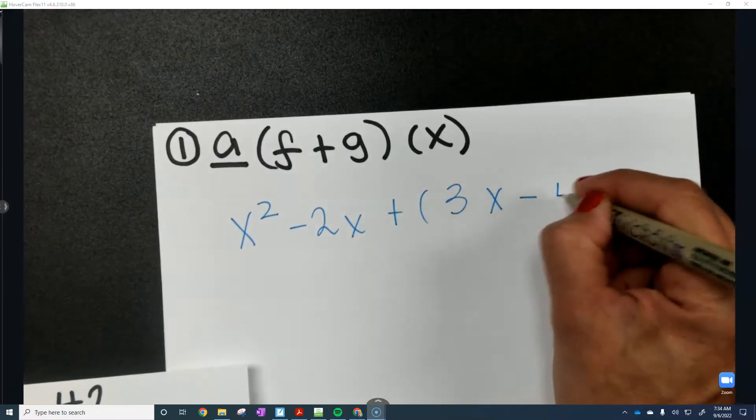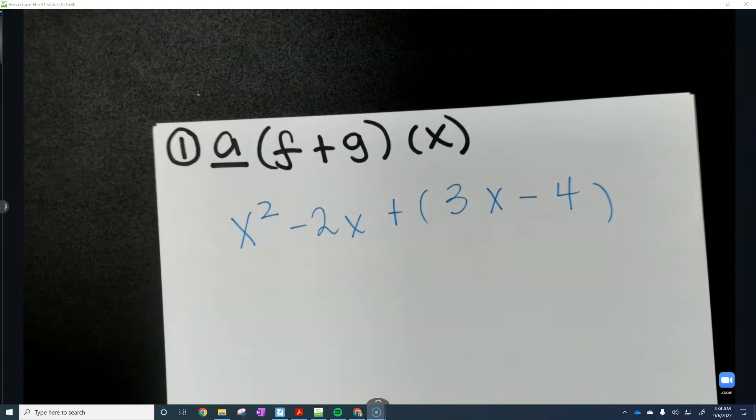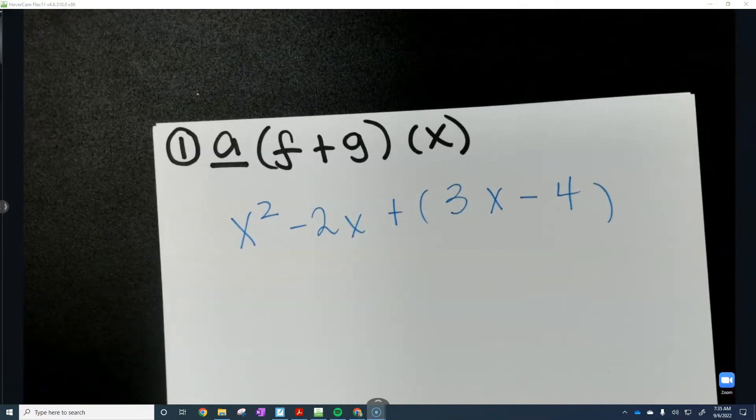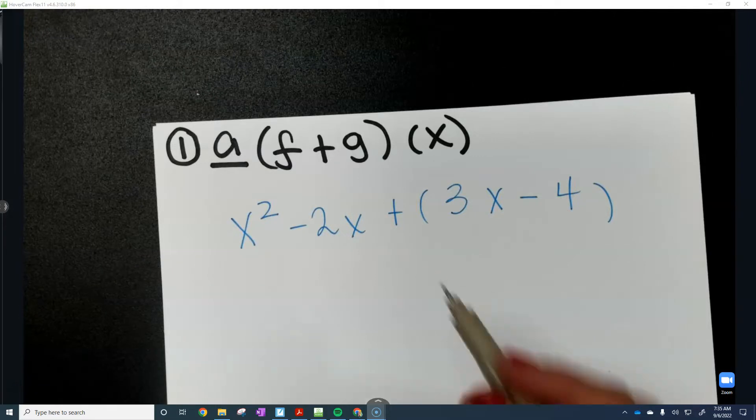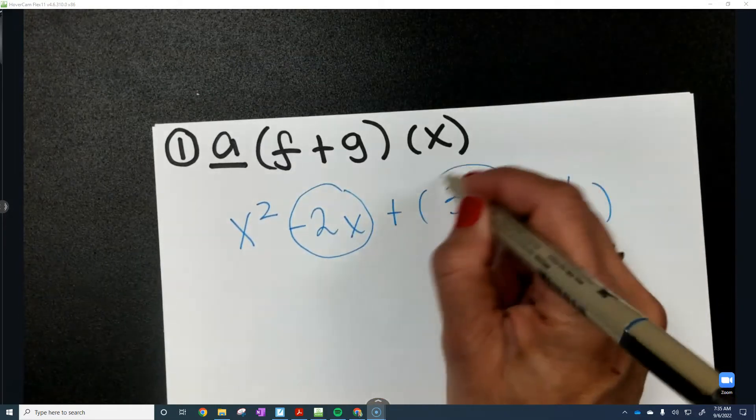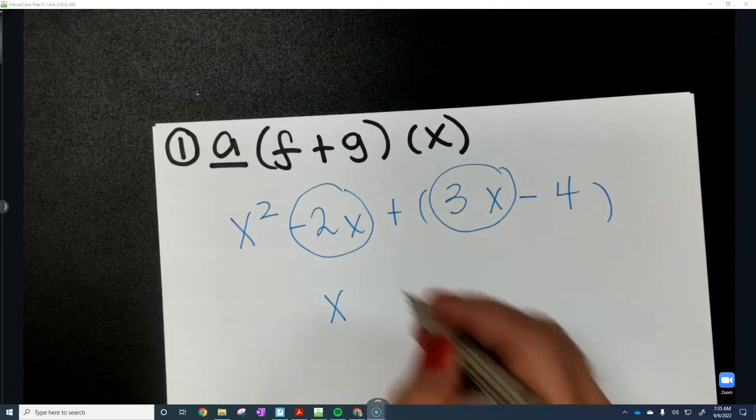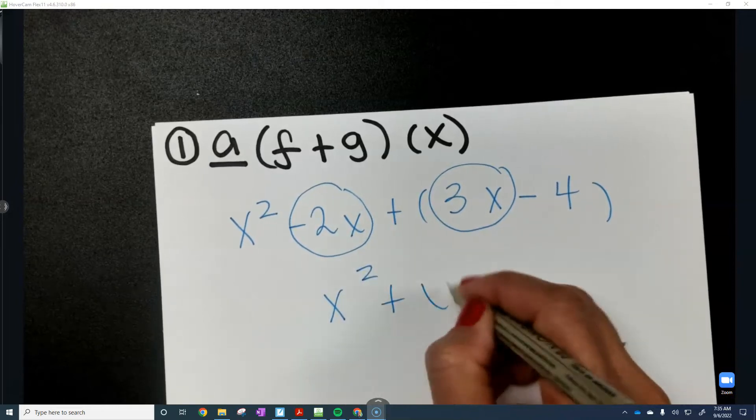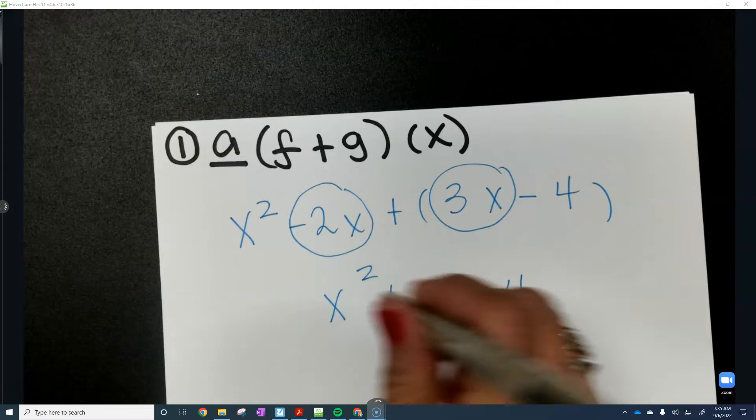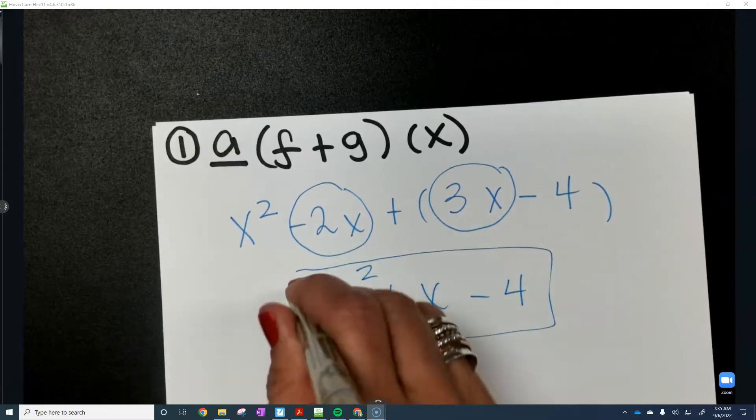But whenever you add, the parentheses don't really mean too much. So now we're just going to combine like terms. So of course, we have two linear terms. So our final simplified answer is going to be x squared plus x minus 4. And that's as far as we're going to take it.